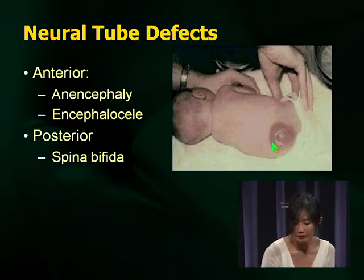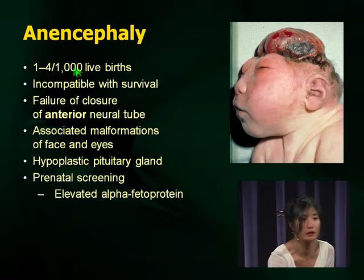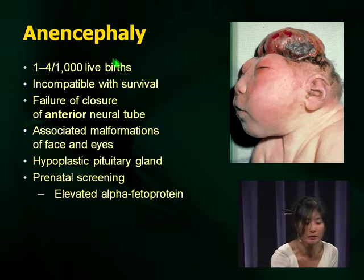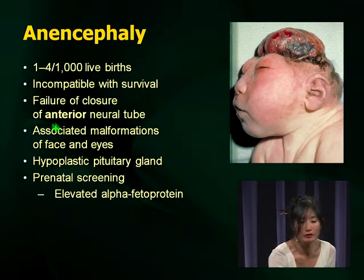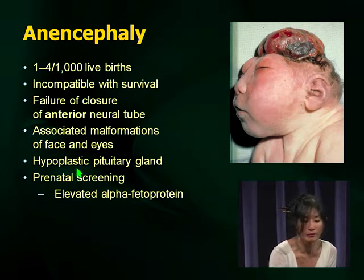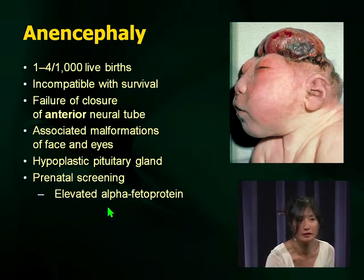Here's a picture of meningocele and anencephaly. You won't be taking care of a lot of these babies because it's not compatible with life, but in the nursery you may deal with it. It's relatively common — one to four per one thousand live births — and it is a failure of closure of the anterior neural tube. Remember there are associated malformations of the face and eyes, and for prenatal diagnosis, alpha-fetoprotein is important.